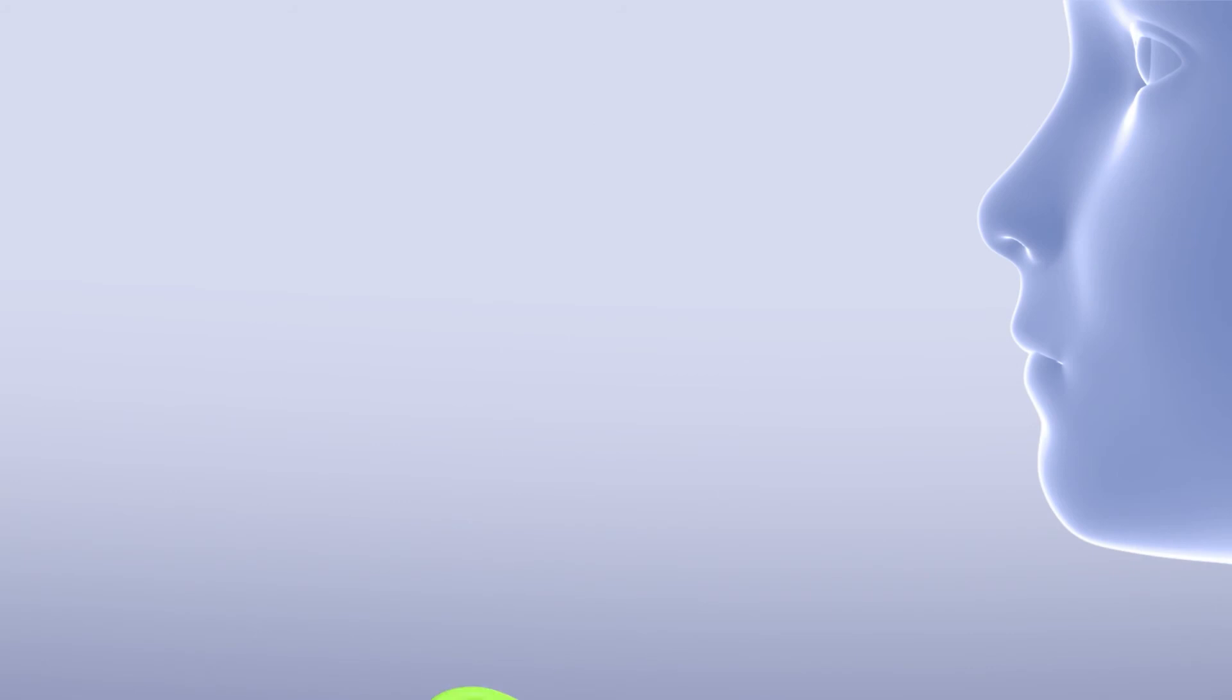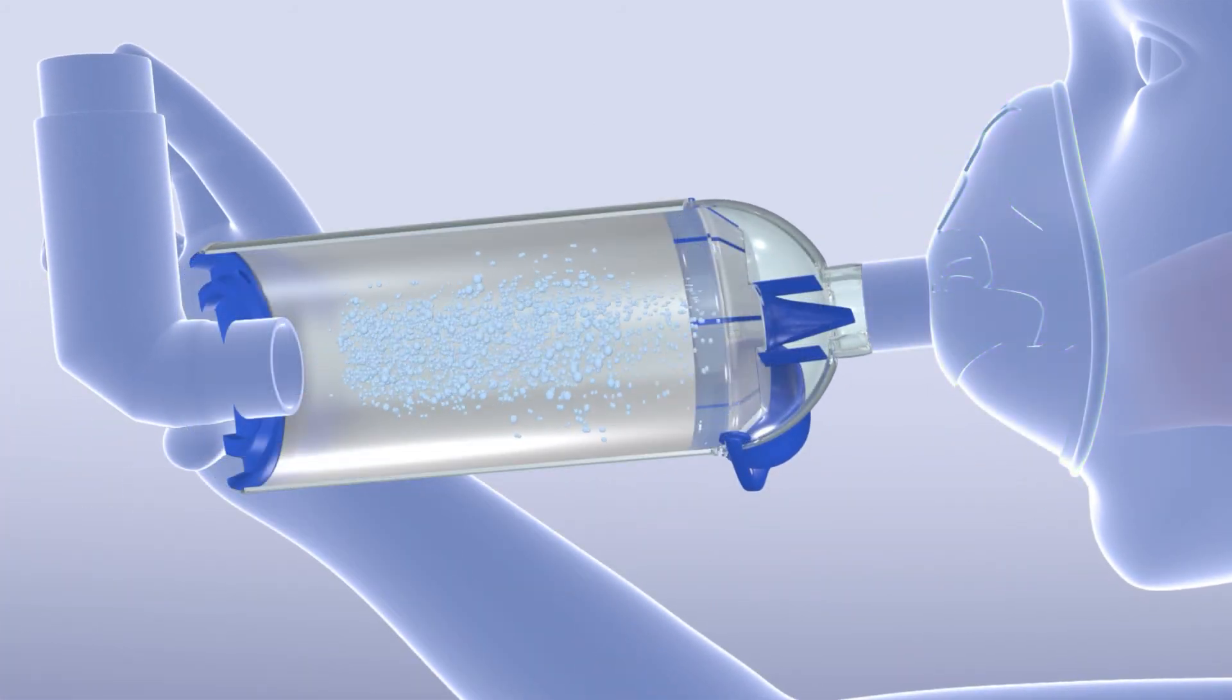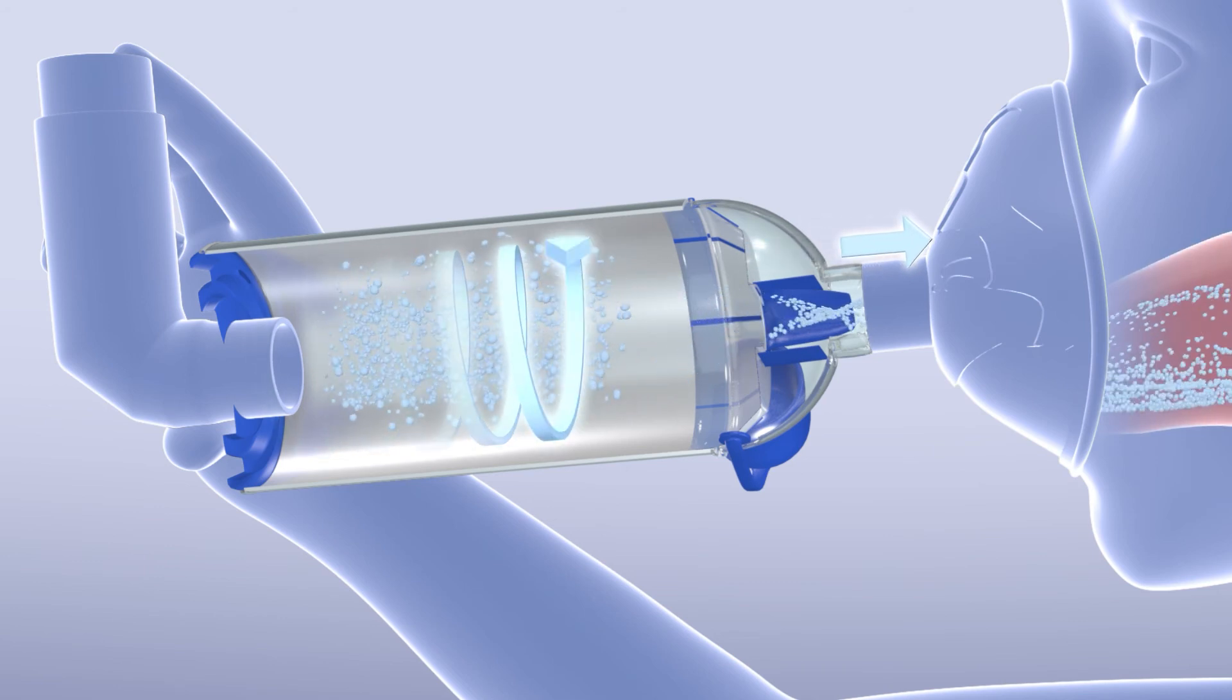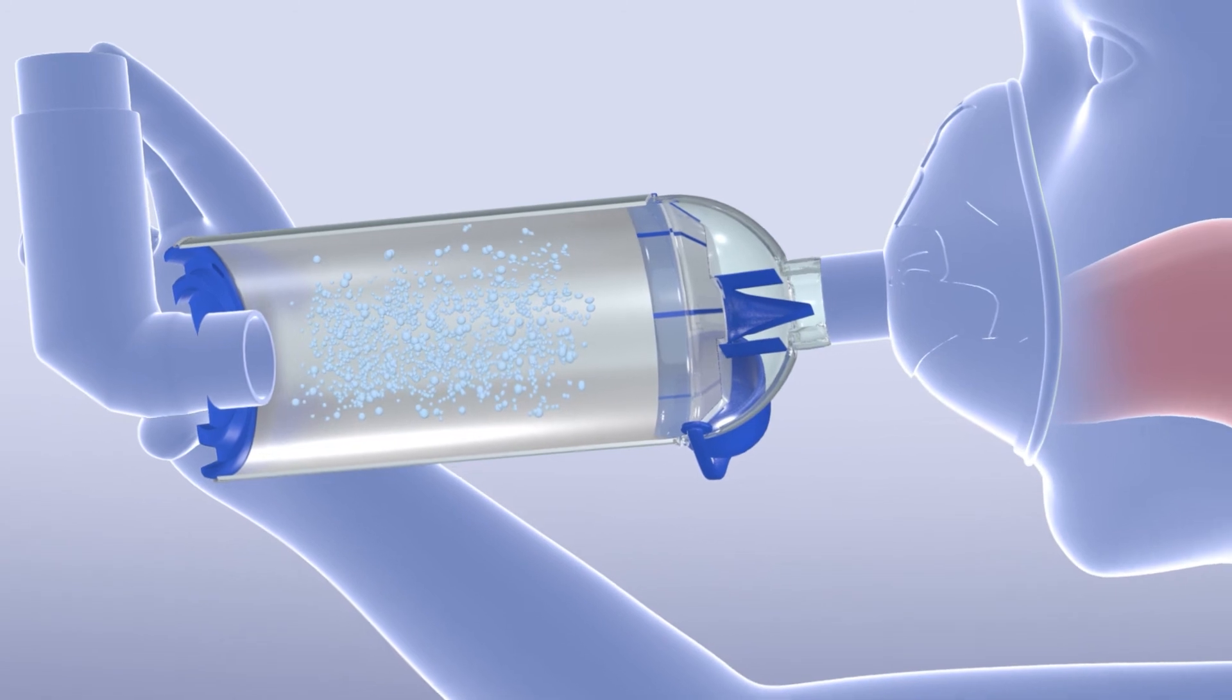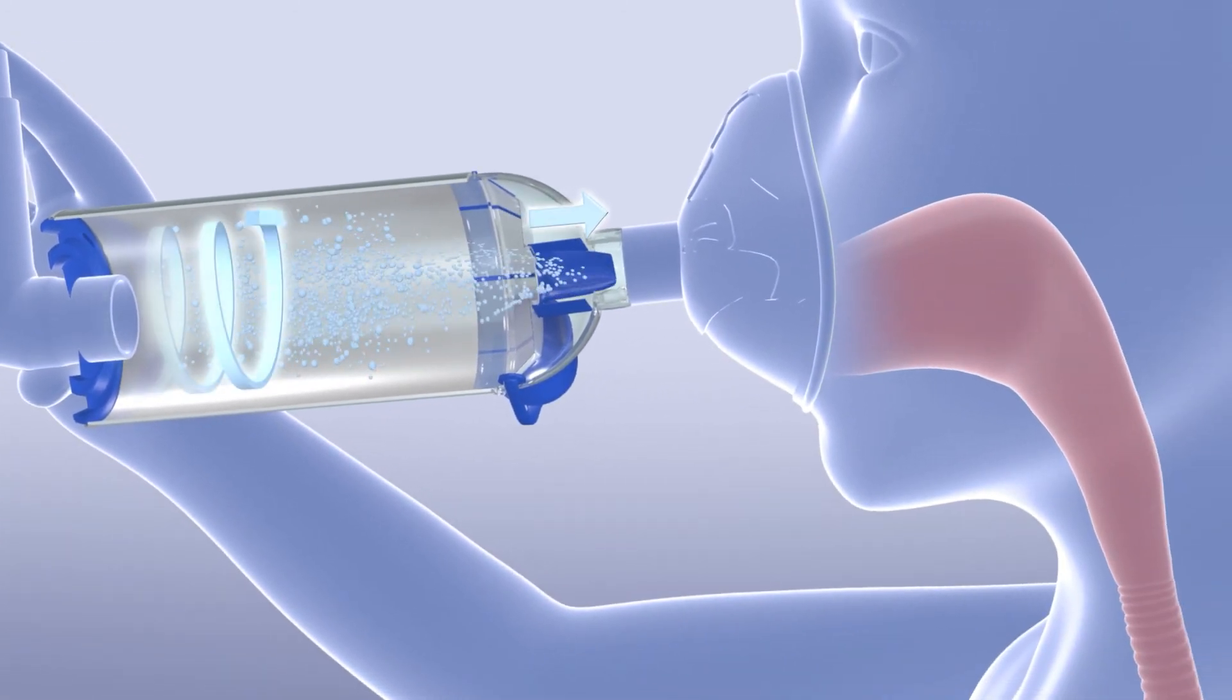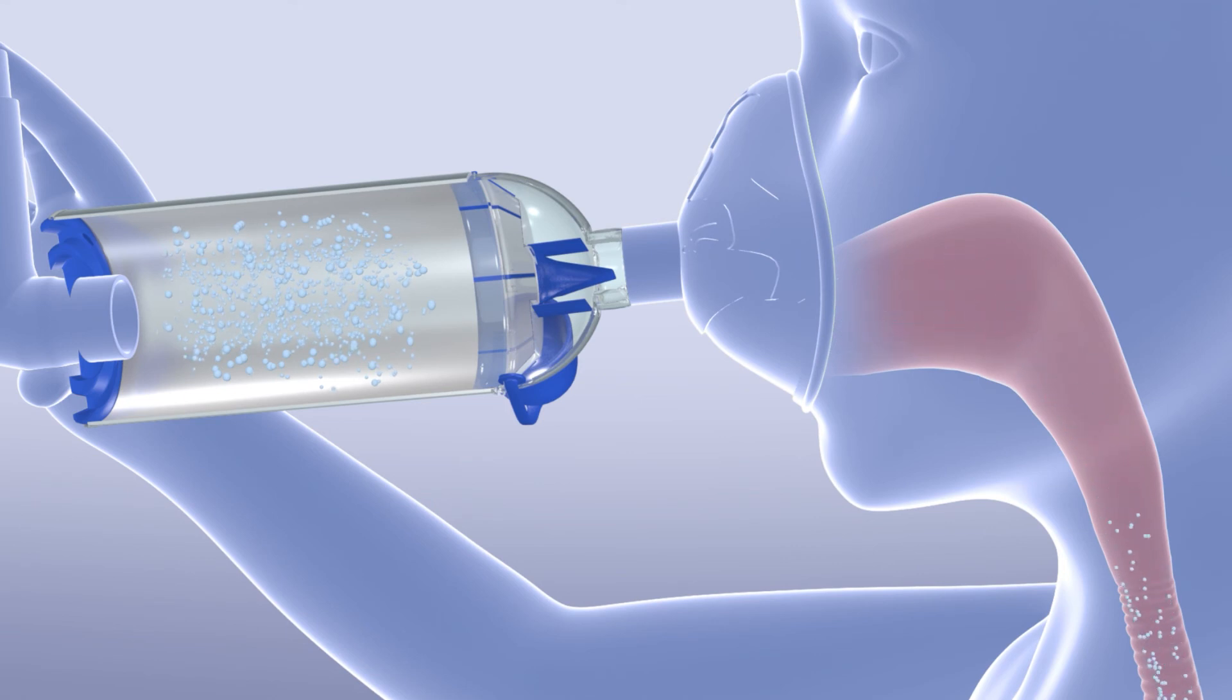The Vortex holding chamber overcomes these hurdles. The Vortex enables the medication droplets to be inhaled one breath at a time, minimizing the technique and coordination needed for effective inhaler treatments. It also lessens medication deposition in the back of the mouth and throat, reducing the chance for unwanted side effects.